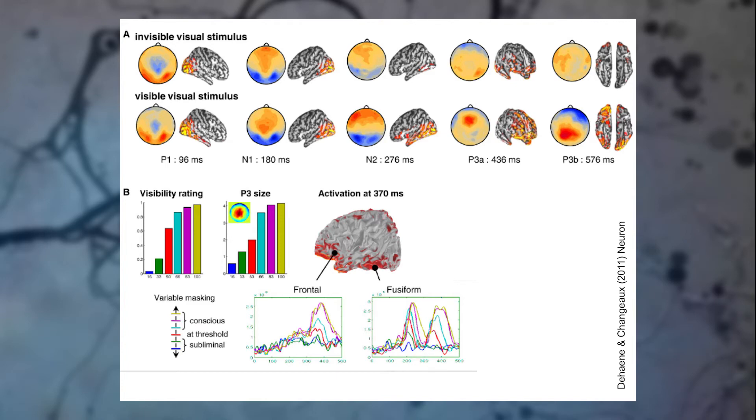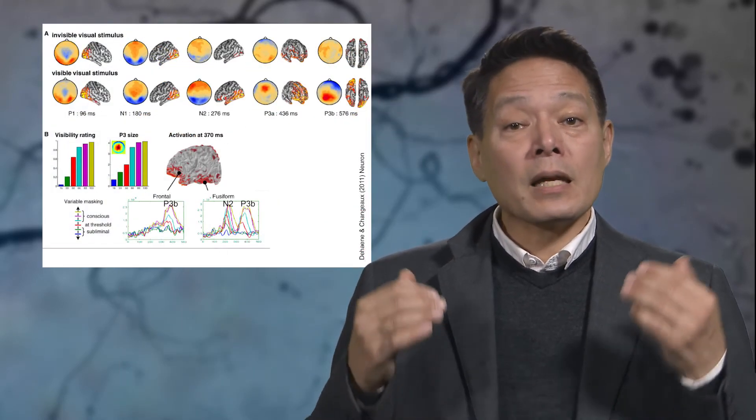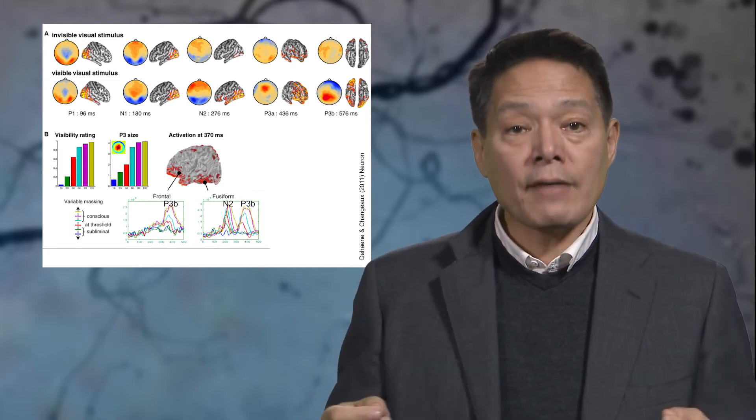In addition, these scientists had observers rank how confident they were that they had seen the target. This is the visibility rating shown on the lower left here. As you can see, the magnitude of the P3B event-related potential component varied with their confidence. The more confident subjects were that they had seen the target, the stronger the P3B signal. Now, what about the earlier N2, shown here? It also seems to vary in the lower right area labeled fusiform with confidence. The more confident subjects were that they had seen the target, the higher the N2 component of the EEG signal. And here you can see the P3B in both the frontal and fusiform areas, which is stronger the more confident subjects were that they had seen a target. So, both the N2 and P3B appear to be signatures of consciously having seen a target.